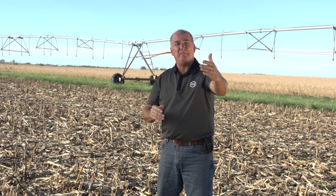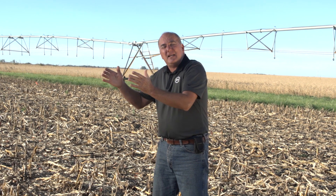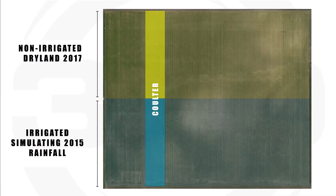When we jumped over the grass strip and came in to the wet side, it showed 11.5 bushels less yield — in other words, water did move that nitrogen down and it had a negative effect. Then right next to it in the next block...